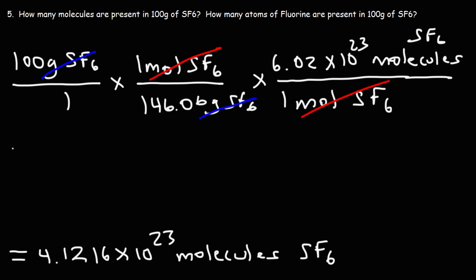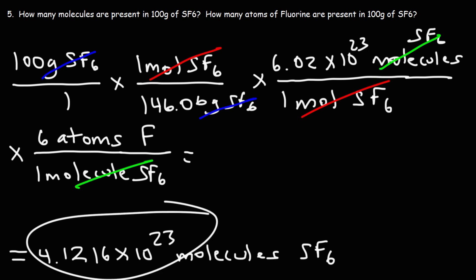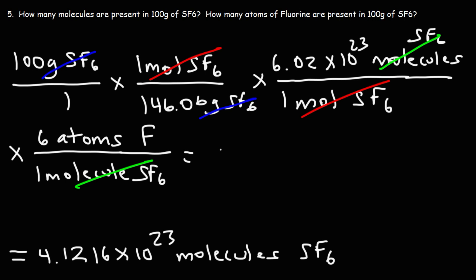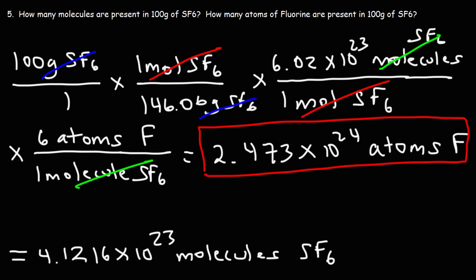Now for part B, we need one additional step: convert from molecules to atoms of fluorine. One molecule of SF6 contains 6 atoms of fluorine. So we multiply our previous answer by 6, giving 2.473 times 10 to the 24 atoms of fluorine. So that's it for this video — now you know how to calculate the number of atoms in a variety of different situations.